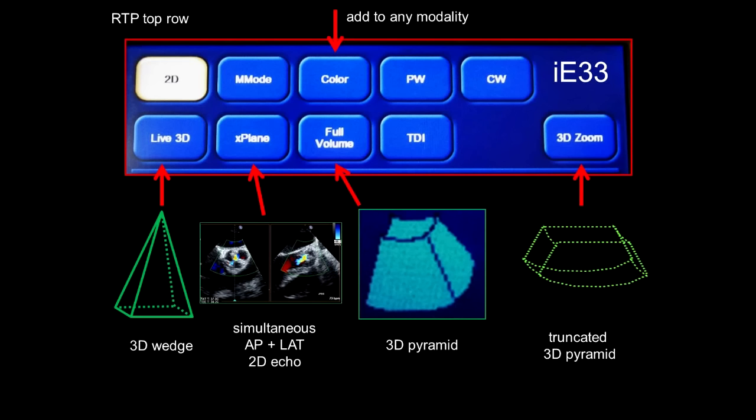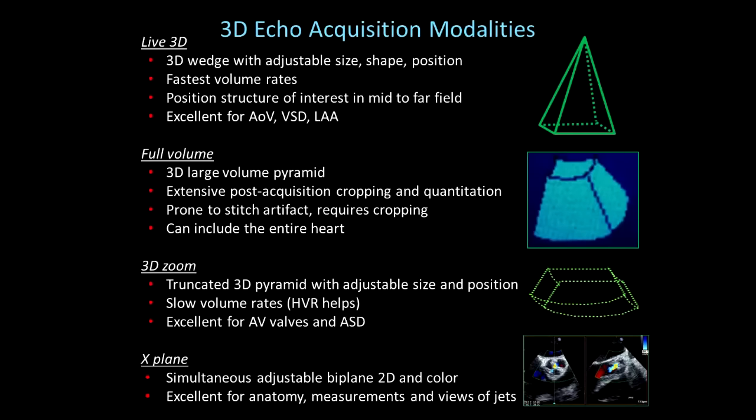There are 4 acquisition modalities. They are chosen from the right touch panel in the top region, and they include Live 3D, X-Plane, Full Volume, and 3D Zoom. We'll talk about all of these in sequence and in detail. Each has their own strengths, limitations, and best applications. They're chosen simply by touching one of the icons in the right touch panel.